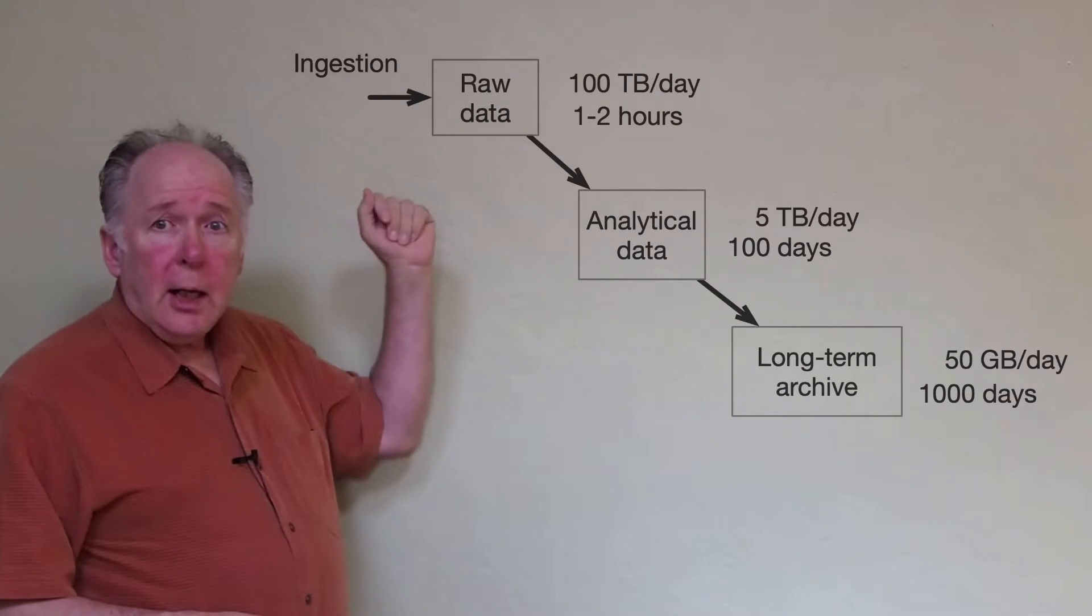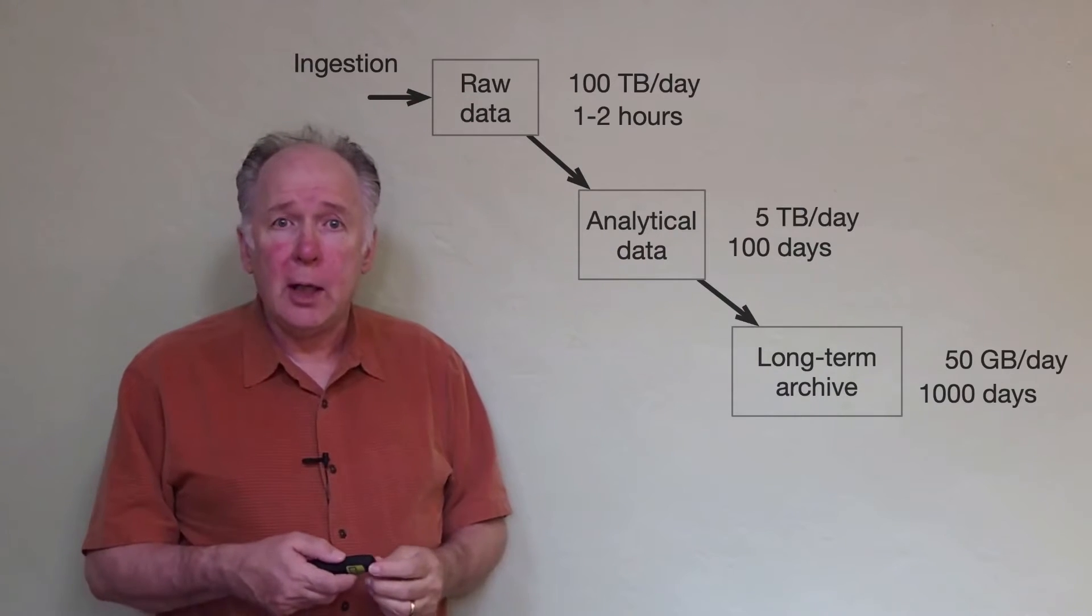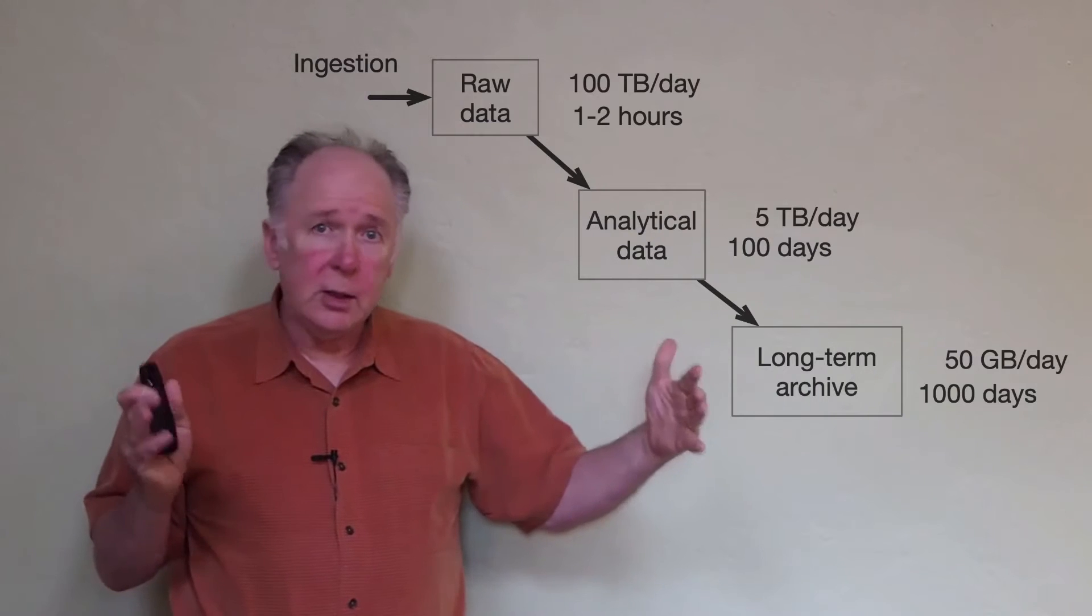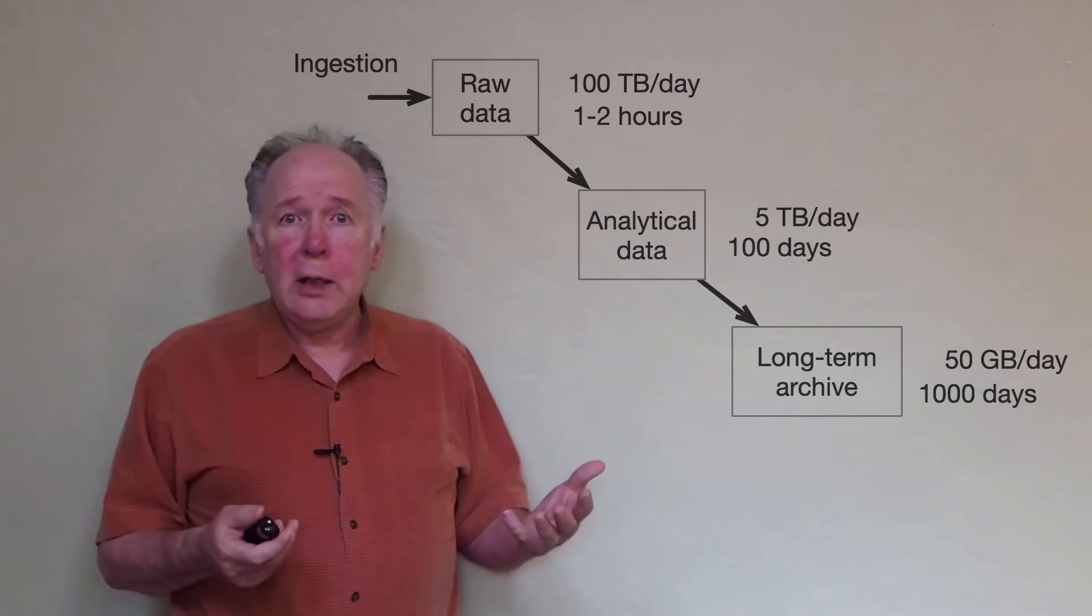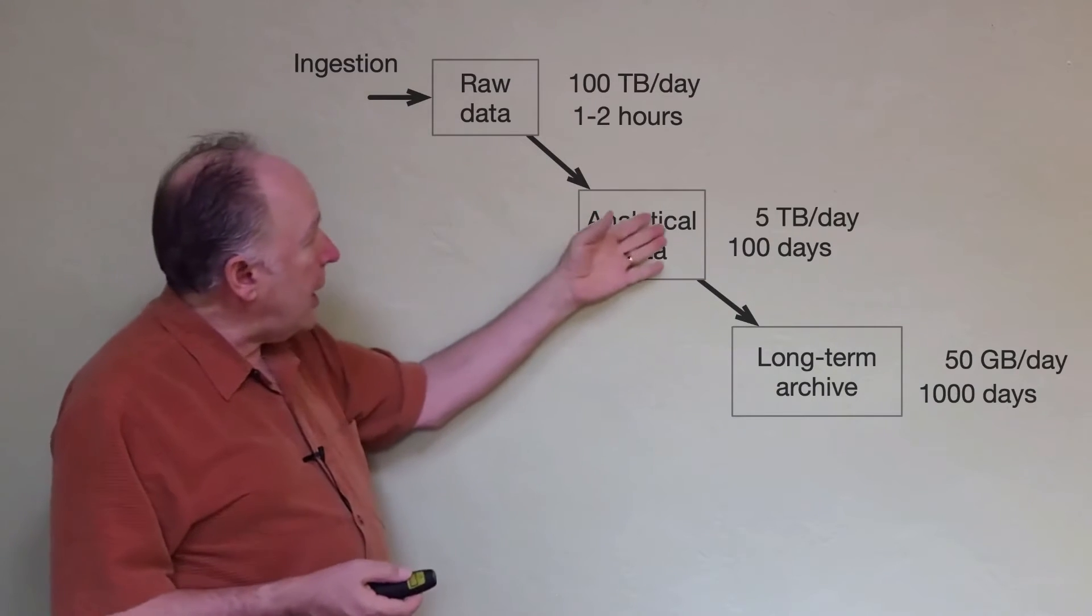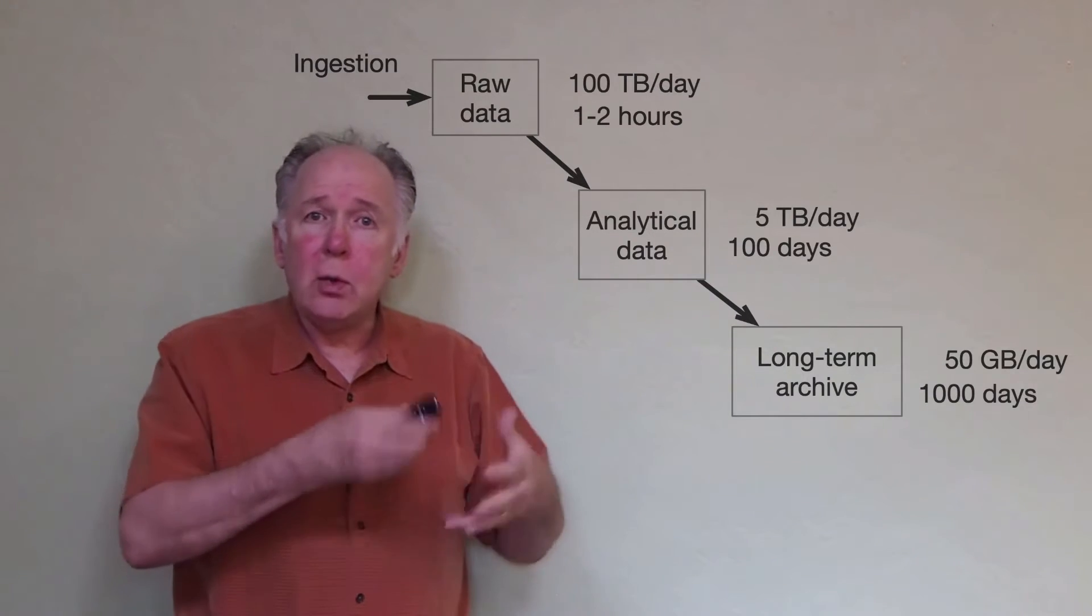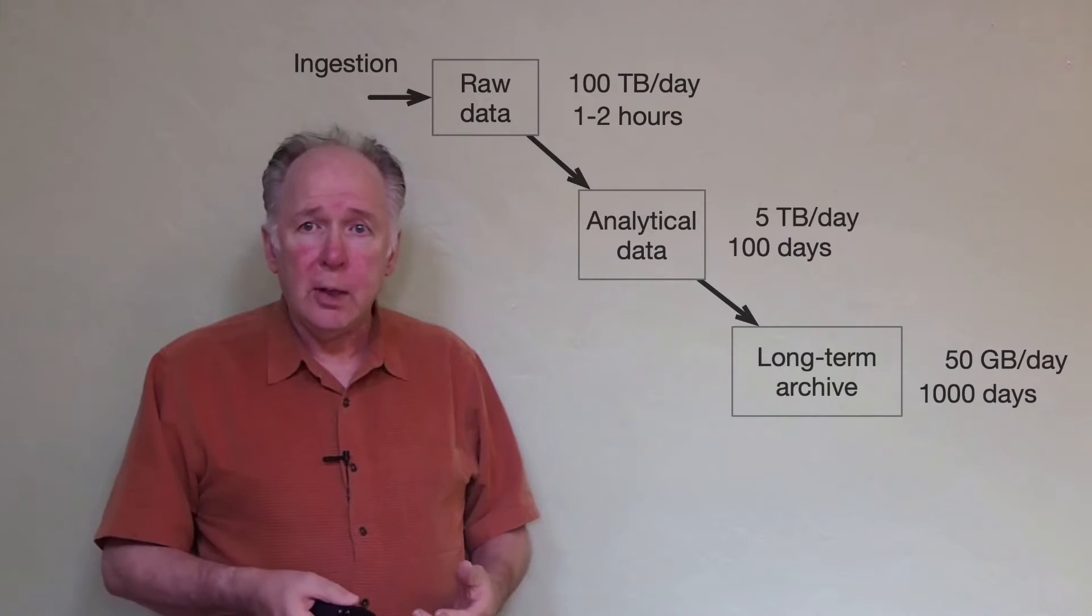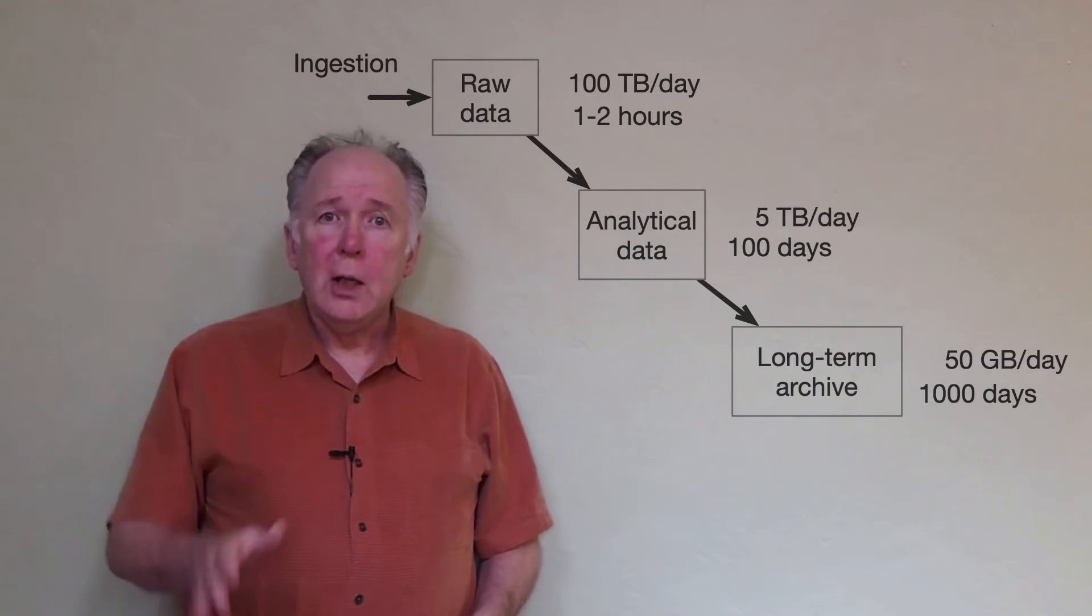So what we're going to look at today is a fairly typical data ingestion pipeline. Data comes in as raw data at a rate of about 100 terabytes per day. The peak would not be distributed evenly, so we estimate something like 2x that at a peak. Then the analytical data that we're going to retain, we're going to retain it for three months and it's going to be considerably compressed from the original. And then finally, we're going to keep analytical summaries and aggregates for a long period of time.